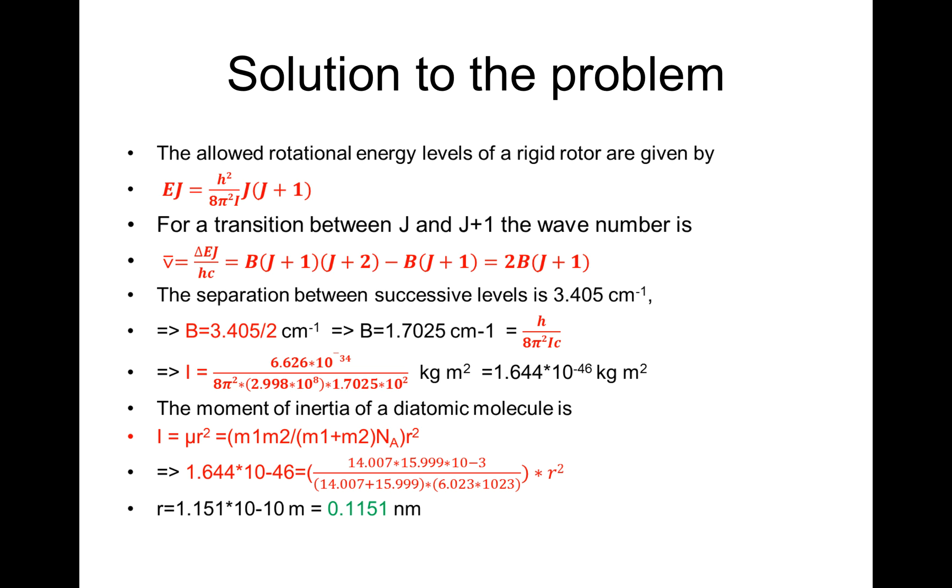The separation between successive levels is 3.405 cm⁻¹. That means B is equal to 3.405/2 cm⁻¹, or B = 1.7025 cm⁻¹, which is equal to h/(8π²Ic). That means I then is equal to 6.626×10⁻³⁴/(8π²×2.998×10⁸×1.7025×10²) kg·m². And that gives us 1.644×10⁻⁴⁶ kg·m².